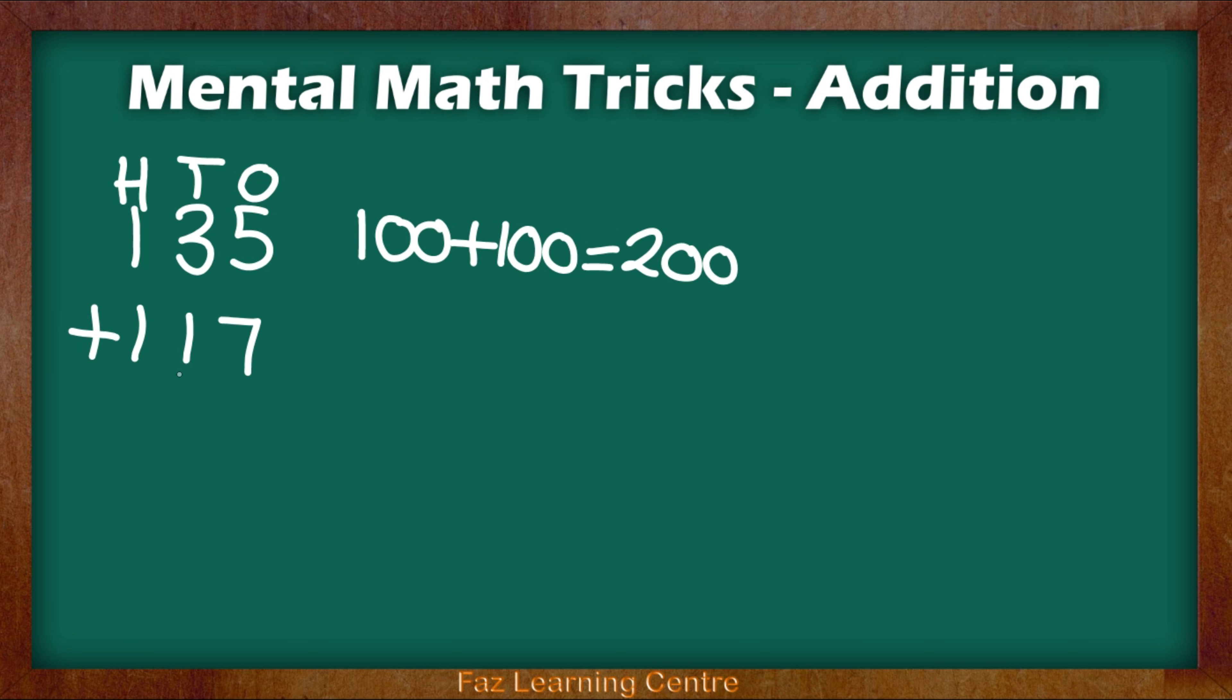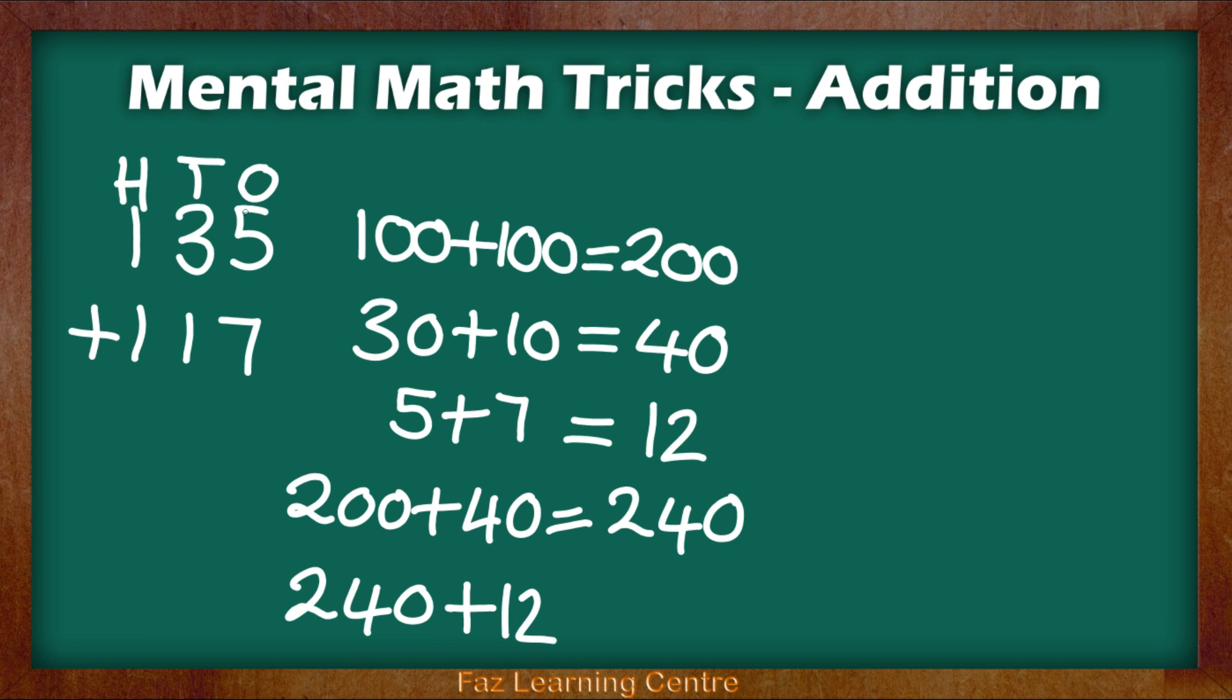Now let's go to the tens. 3 tens add 1 ten. 30 add 10 gives us 40. And then let's look at the ones. We have 5 add 7. 5 add 7 equals 12. Now when we look at this and you're thinking about how you're going to add them together, you're going to think 200 add 40. 200 add 40 is 240. And then I'm going to add 12 which has come from the ones.